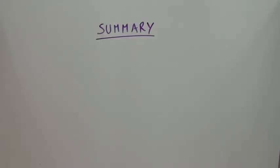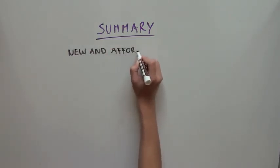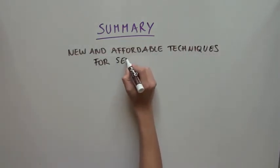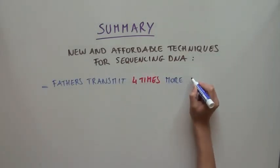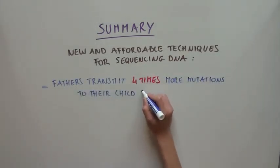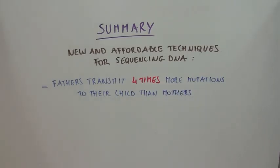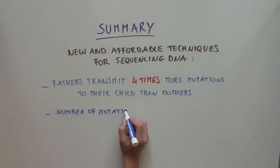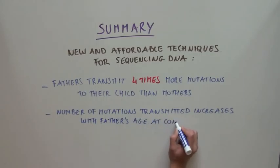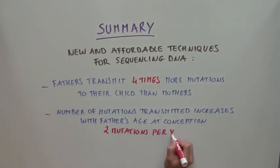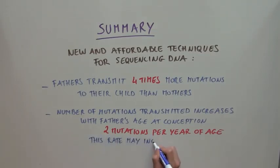So what did this study show? Thanks to new and affordable techniques for sequencing DNA, this study was able to show that fathers transmit a considerable number of single-base mutations to their child, about four times more than mothers. In addition, this study also showed that the number of mutations transmitted by the father increases as the father ages at a rate of about two mutations per year of the father's age at time of conception. And this rate may increase exponentially at ages above 40 years.